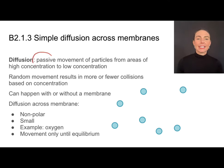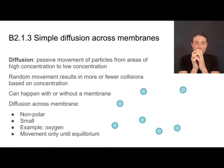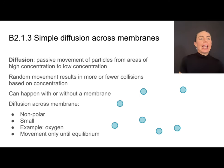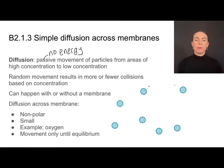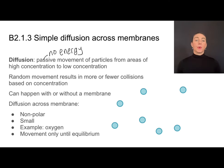Diffusion is the passive movement of particles from an area of high concentration, where they're really crowded, to low concentration, where they are less crowded. When we say passive, we mean that no energy is required — this all just happens based on the movement of those molecules. This can happen with or without a membrane. The molecules were crowded and just diffused outward.